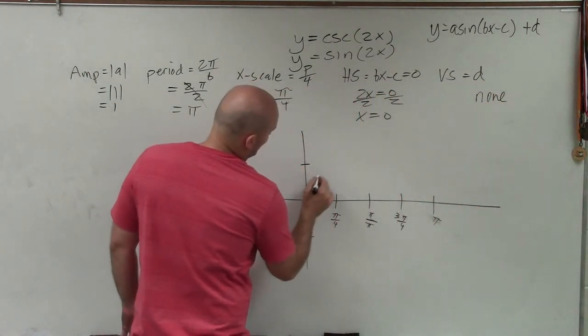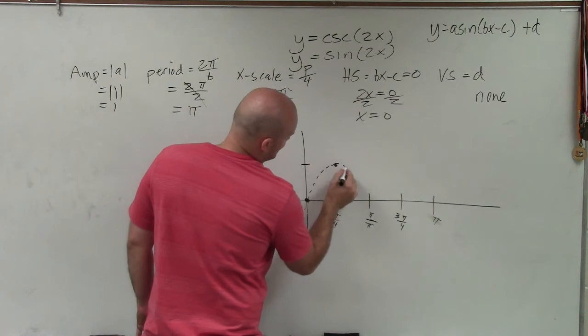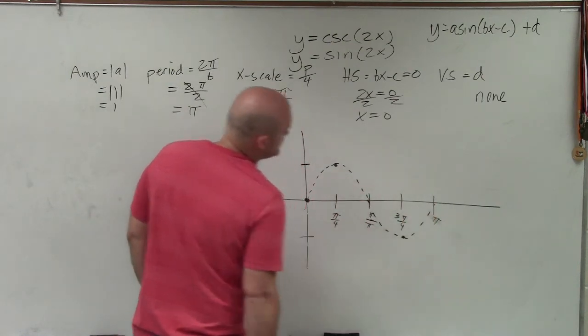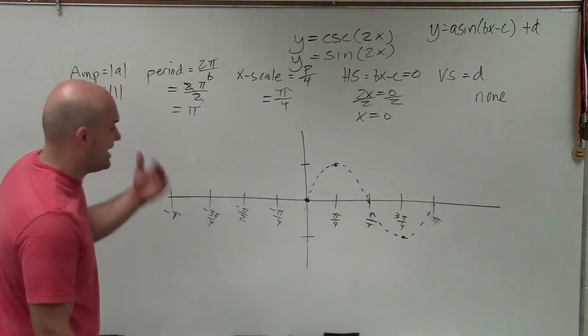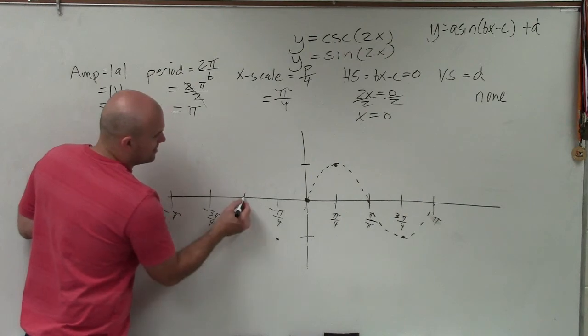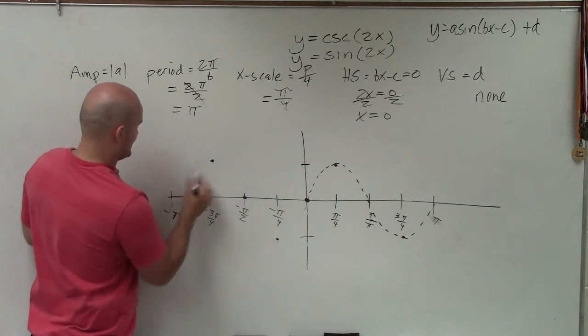So by knowing what the parent graph looks like, that is what the sine function would look like at 2x. And I can follow this along in the negative direction. Next one would be my minimum, intercept, maximum, intercept.